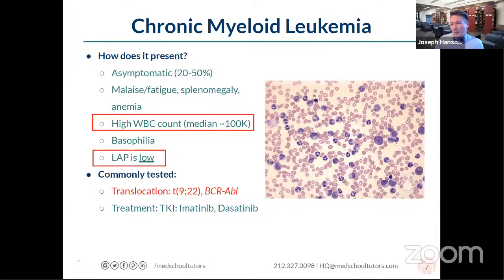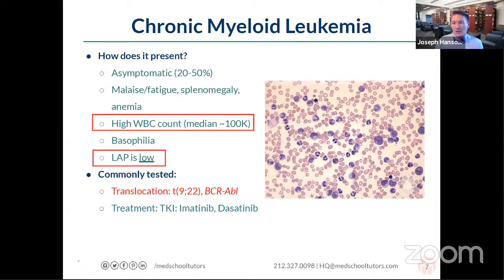CML has the t(9;22) translocation — chromosome 9 and 22 fused into one mega chromosome, creating the BCR-ABL fusion gene. This is pathognomonic for CML. If you see t(9;22), you know it's CML. Treatments include imatinib and dasatinib; imatinib is the main one tested on the exam, especially for Step 2.